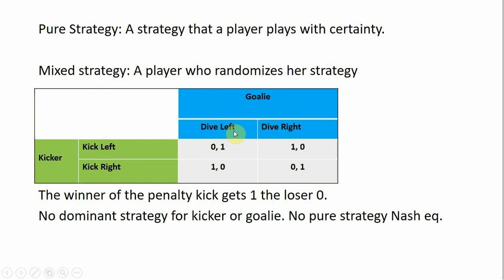we have a goalie who can dive left or dive right, and a kicker who can kick left or kick right. We're going to assign the winner of the penalty kick one point and the loser zero.